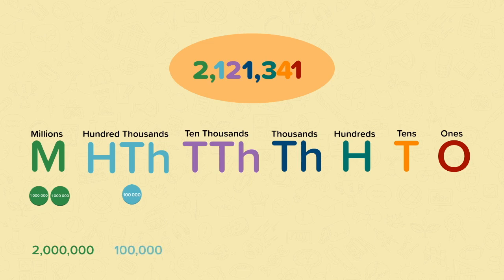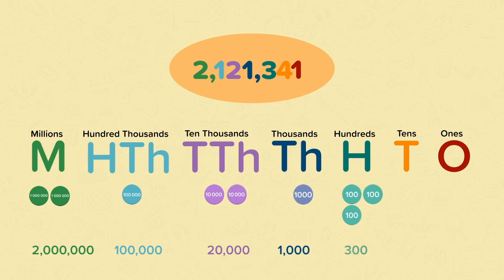One hundred thousand can be represented with one hundred-thousands counter. Twenty thousand can be represented with two ten-thousands counters. One thousand can be represented with one thousands counter. Three hundred can be represented with three hundreds counters. Forty can be represented with four tens counters. And one can be represented with one ones counter.